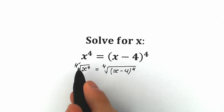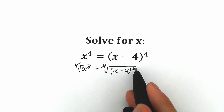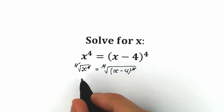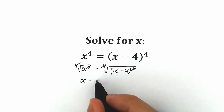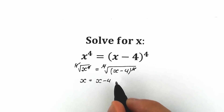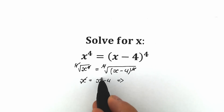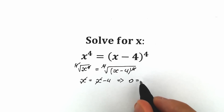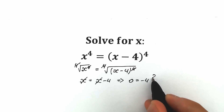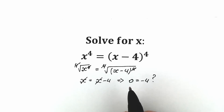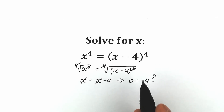Right now we can easily cancel this 4 and this 4, and as a result one part of students write that x equals x minus 4. From here we can cancel this x and as a result we have 0 equals minus 4. A lot of students solve this challenge like that — they're confused about this part because this is a very bad solution in terms of math. Just forget about this solution.